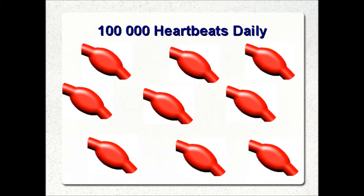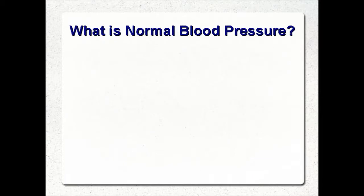That is all the more reason to do everything you can to keep your blood pressure in a normal range. Blood pressure is measured in millimeters of mercury, abbreviated mmHg. This term refers to the height to which a column of mercury is raised by an equivalent pressure. Today's blood pressure machines use newer technology to measure blood pressure, but the units of measurement remain the same.